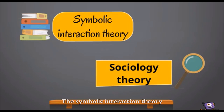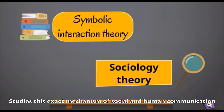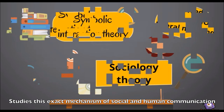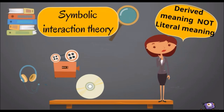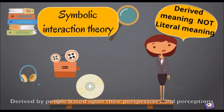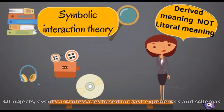The Symbolic Interaction Theory, a pivotal component of Sociology Theory, studies this exact mechanism of social and human communication or interaction. It takes into consideration the symbolic meaning derived by people based upon their perspectives and perceptions of objects, events, and messages based on past experiences and schemas.